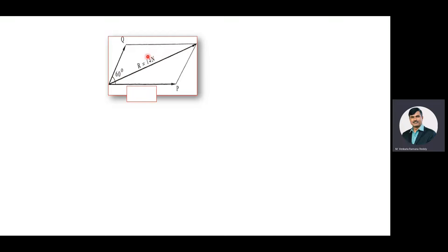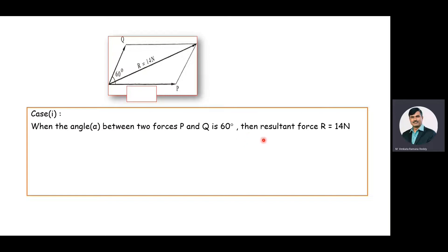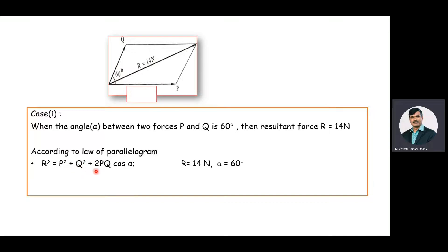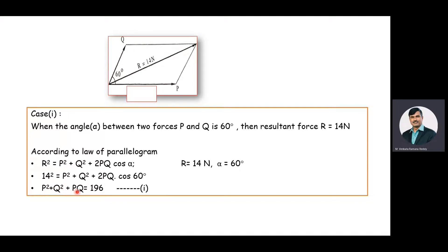In Case 1, the resultant of the two forces is 14 Newton. P and Q are the two unknown forces. The angle between the two forces is 60 degrees. According to the parallelogram law, R² = P² + Q² + 2PQ cos α. Substituting R = 14 Newton and α = 60 degrees, we get 14² = P² + Q² + 2PQ cos 60°. After simplifying, P² + Q² + PQ = 196. This is equation number 1.